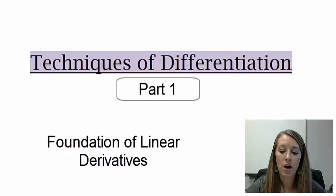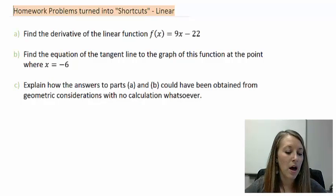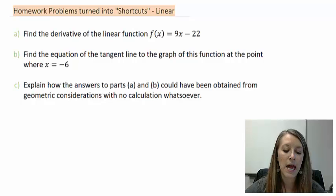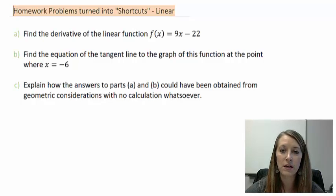First let's do one of these background problems. We want to find the derivative of the linear function f(x) equals 9x minus 22, and we're going to use the definition. Then we're going to find the equation of the tangent line to the graph of the function at the point where x is equal to negative 6. And hopefully that's going to tell us how we could have came up with the answer to part a by using geometric considerations, meaning by looking at the graph without actually doing any calculations in the first place.